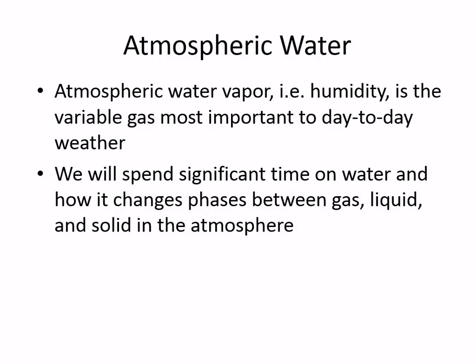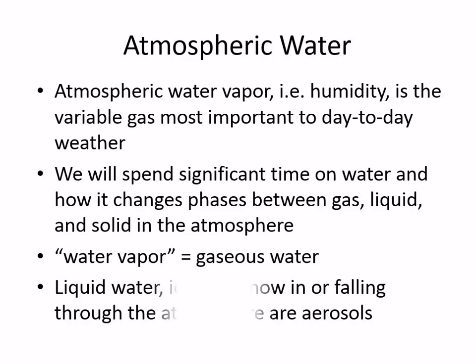The third variable gas is water vapor — we'll be talking more about it when we discuss humidity. Humidity is a description of what kind of water vapor you have in the atmosphere, and it can vary a lot from day to day and location to location. Water vapor is water in its gaseous state. Also, aerosols are something in the atmosphere that is not a gas — a suspended solid or liquid particle.